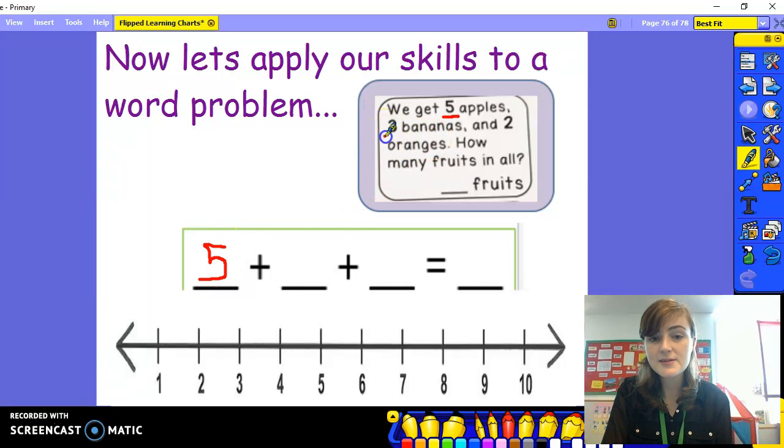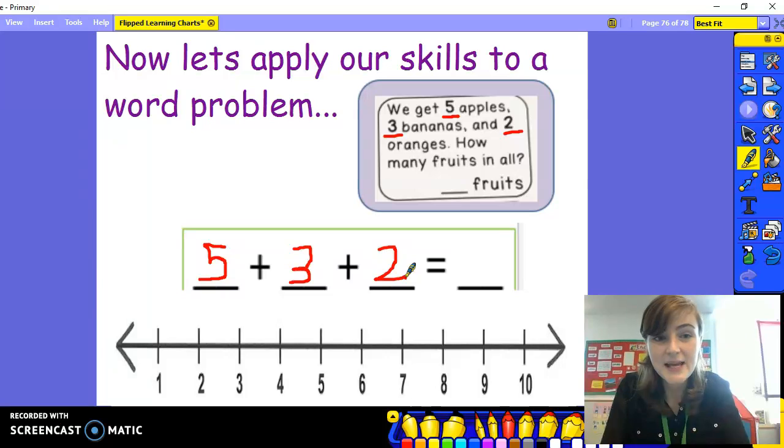Five. Plus three bananas. That's group number two. And two oranges. That's group number three. Our number sentence is five plus three plus two. Now we need to find the total.